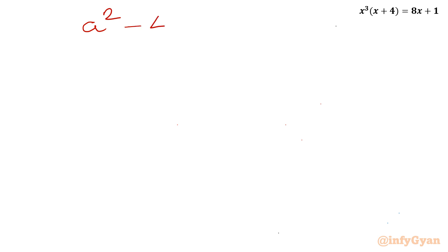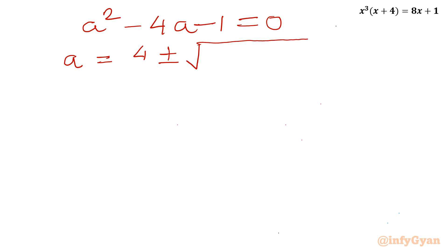So from A squared minus 4A minus 1 equal to 0, I can write A equal to minus b, which is minus minus 4, plus or minus square root of b squared minus 4ac, divided by 2a, which is 2 times 1, equals 2. So this gives 4 plus or minus square root of 16 plus 4, all divided by 2.